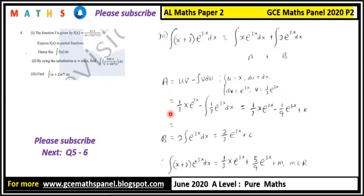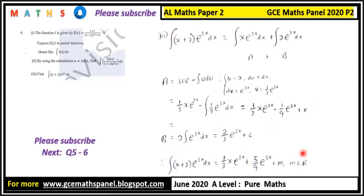Therefore A equals uv minus the integral of v du, giving one third x e to the power 3x minus the integral of one third e to the power 3x dx. For part B, integrating two e to the power 3x gives two thirds e to the power 3x plus c. Combining with constant k to form a new constant m, the total integral is one third x e to the power 3x plus five ninths e to the power 3x plus m, where m is an element of the real numbers.